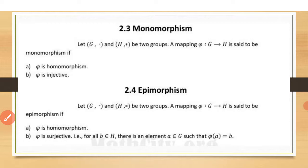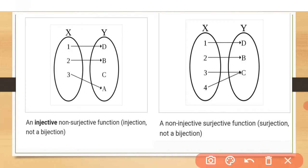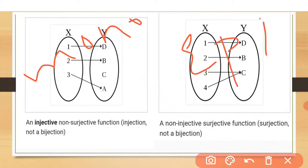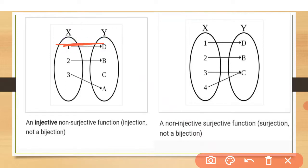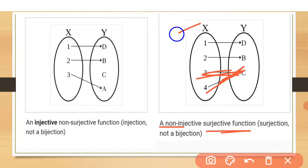Looking at the functions: the first function is injective, which means it is monomorphism — every image has only one pre-image, one-to-one. However, range is not equal to codomain, so some elements remain, meaning it is not bijective, only injective. The second function has two inputs giving one output — not injective, but surjective — which means epimorphism.